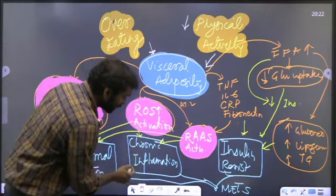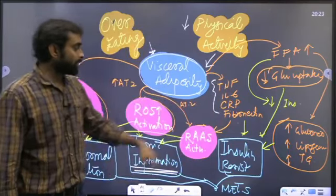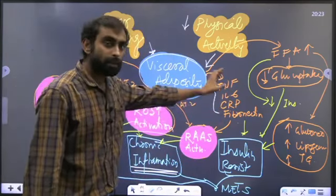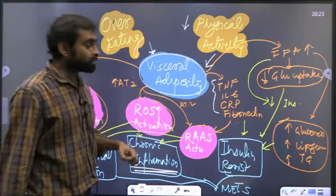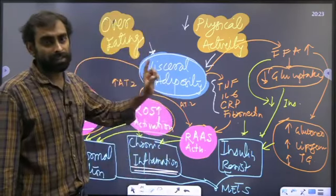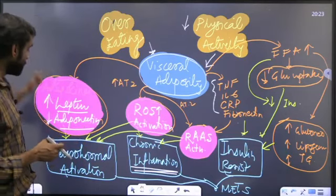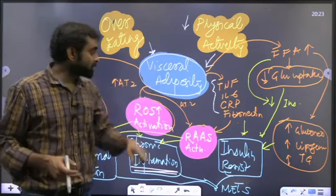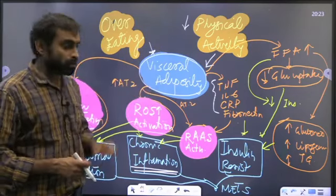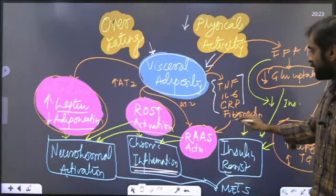Leptin increases and adiponectin decreases, directly controlling your hunger centers. The second thing affected is ROS activation - reactive oxygen species. At the same time, the renin-angiotensin-aldosterone system gets activated via these cytokines.